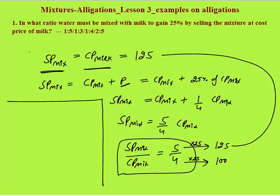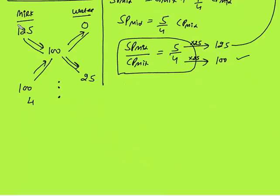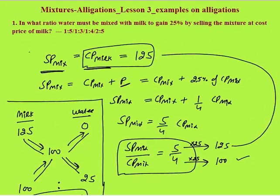Now we can simply apply the allegation. We are mixing milk and water. Cost price of milk is 125, cost of water is 0, and average cost price of mixture is 100. Subtracting diagonally — smaller value from the larger value — 100 minus 0 gives 100, and 125 minus 100 gives 25. This ratio comes to 4 is to 1. So milk and water must be mixed in the ratio 4 is to 1 to have a profit of 25%.